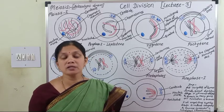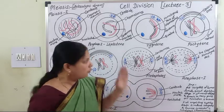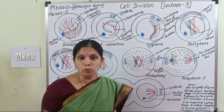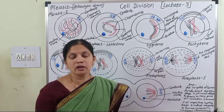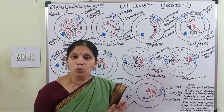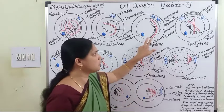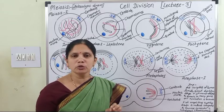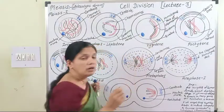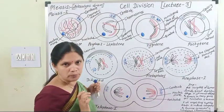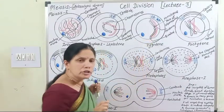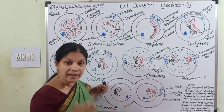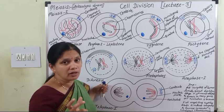When the cell enters zygotene, the homologous chromosomes lie near to each other and pairing of homologous chromosomes takes place. This process is known as synapsis — the pairing of homologous chromosomes. There is a formation of bivalents, also called the dyad stage.